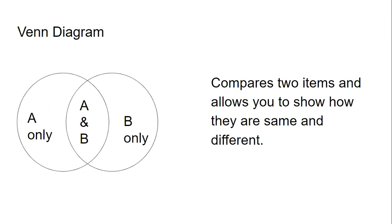A Venn diagram is used to compare and contrast two items. It can show you how they are different as well as how they are the same.